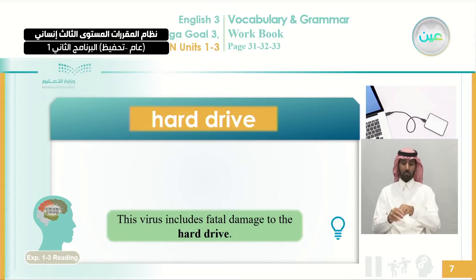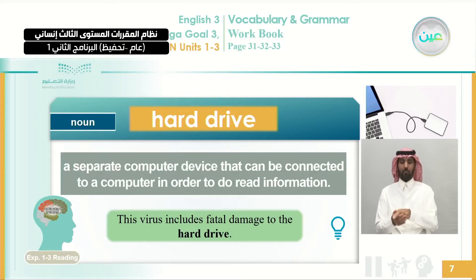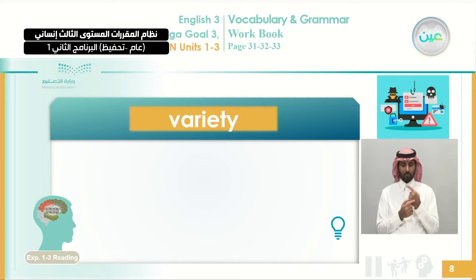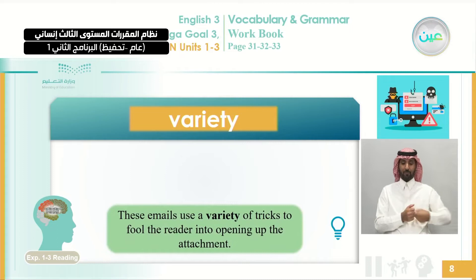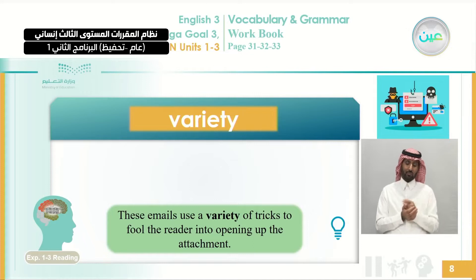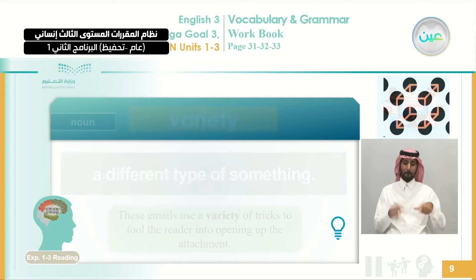The hard drive is a noun. It is a separate computer device that can be connected to a computer in order to read information. Here we're talking about variety. What is the meaning of variety? We can guess the meaning from the text: these emails use a variety of tricks to fool the reader into opening up the attachment. Variety means several or many things — a different type of something.